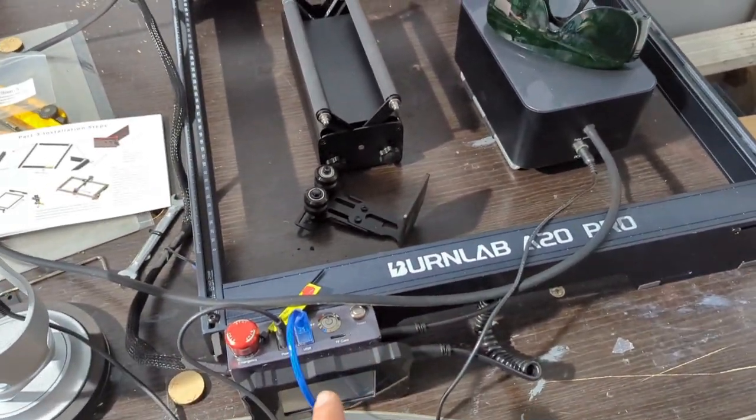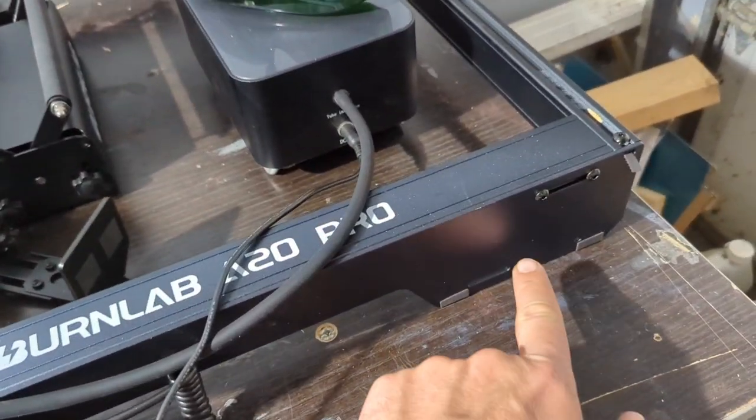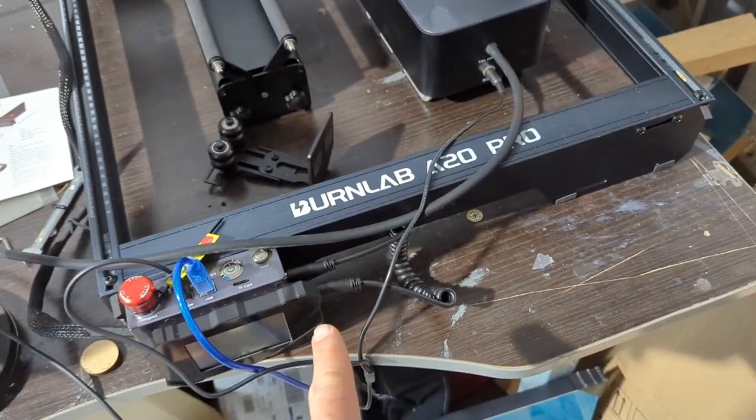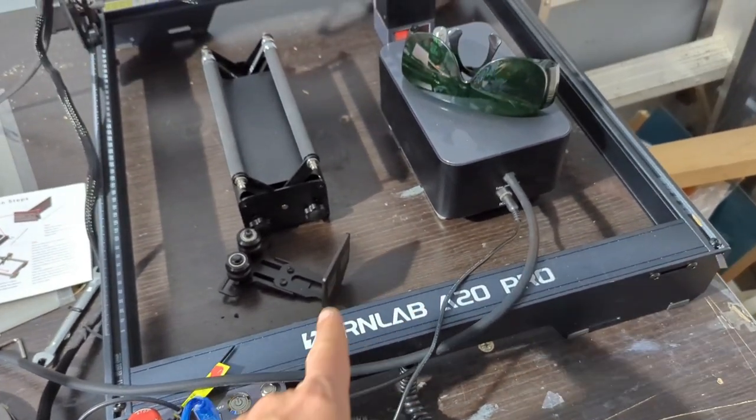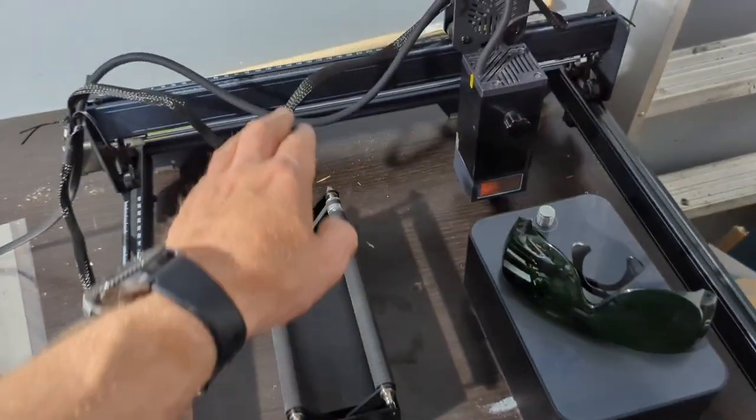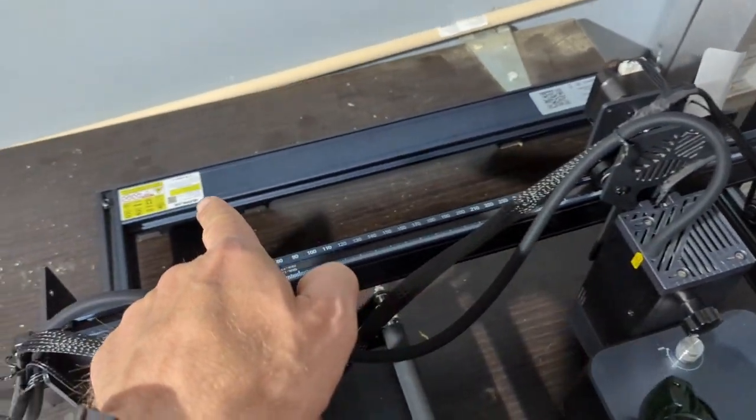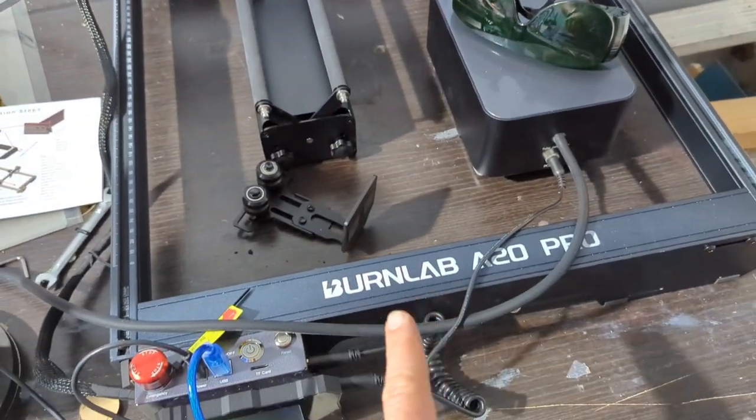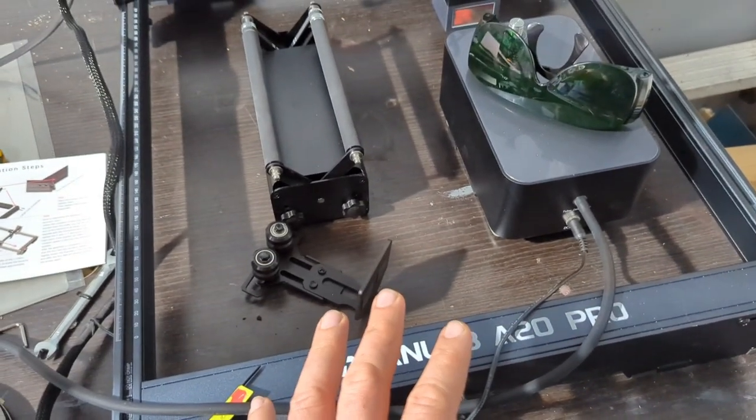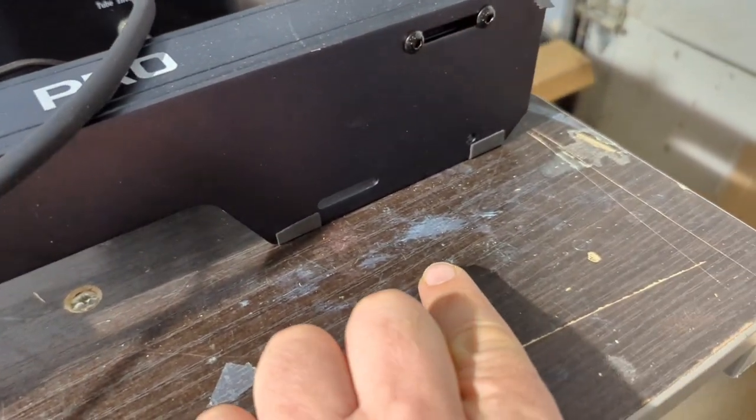First, just pay attention to the orientation. There are these front panels that go on here which act as the legs. Make sure these go in the right order. The one with the warning label here is in the back, you can see there. The Burn Lab one is in the front. The picture is not the best to show that.